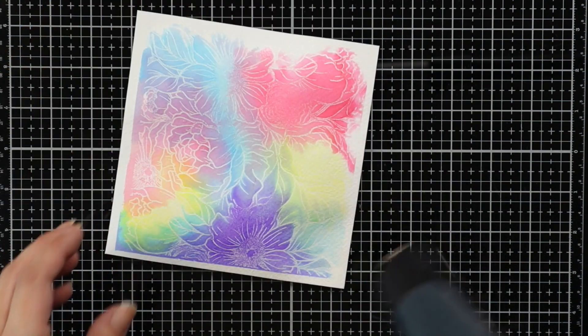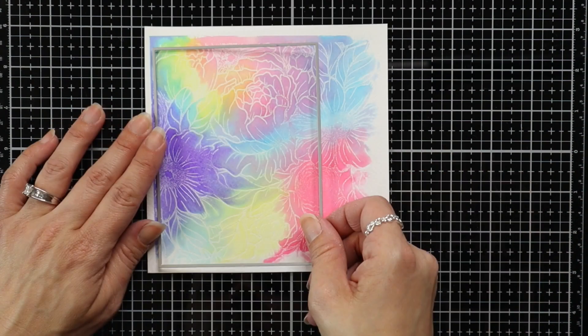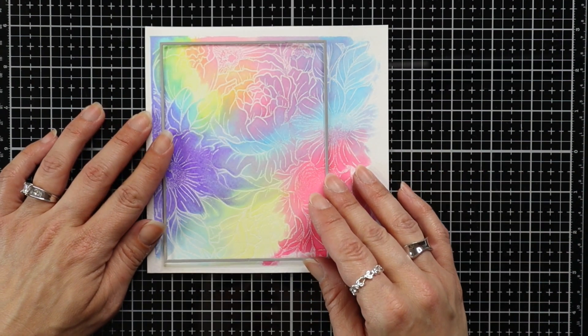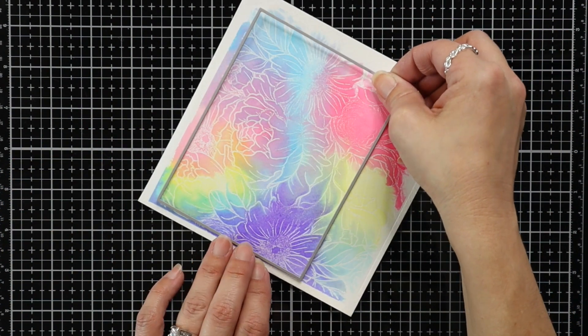So I did help speed up that drying process. I'm moving my heat tool a lot because I don't want to re-melt that embossing powder and to flatten that I just take a piece of copy paper place it over the background and run it through my die cut machine.